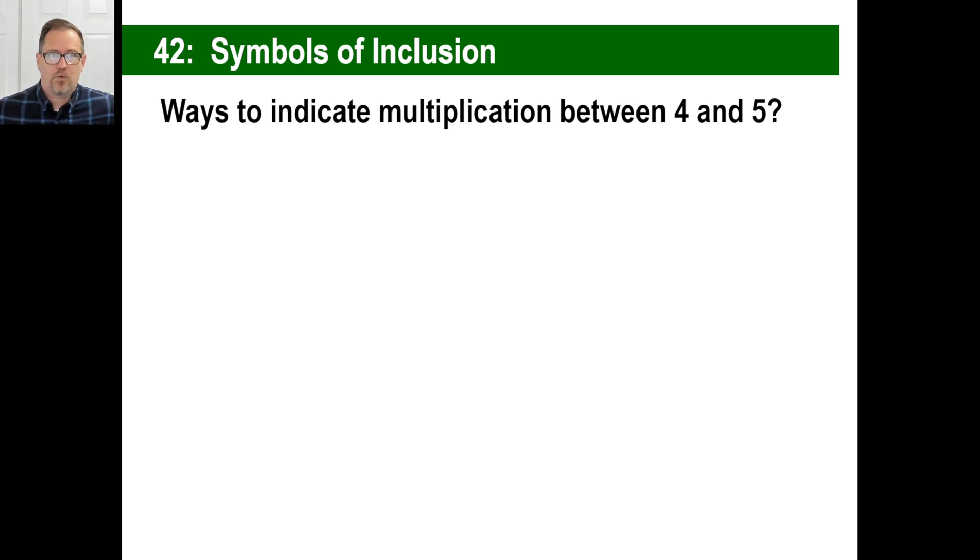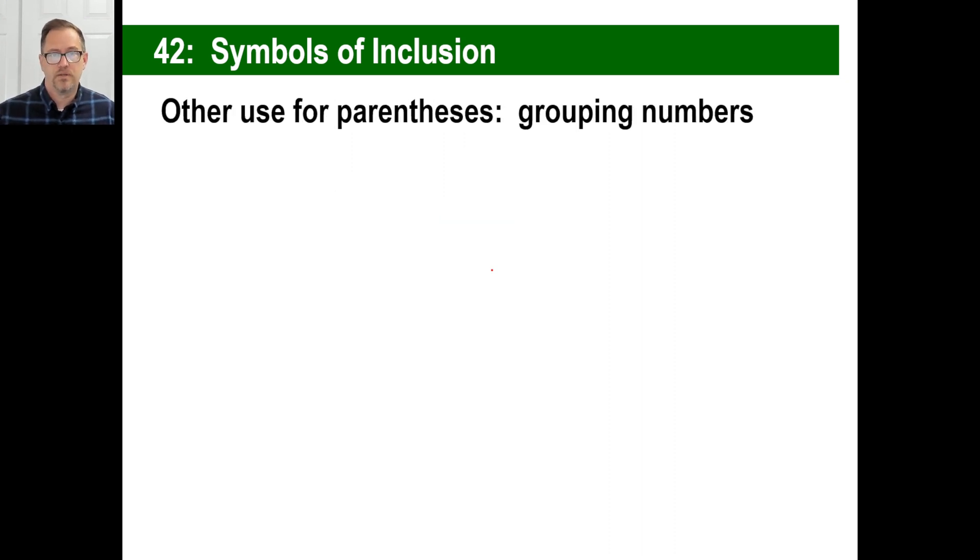Hey guys, let's take a look at lesson 42, the symbols of inclusion, which means you include things. What are some ways that you can say 4 times 5? Well, you can go 4 times 5, you can say 4 - we avoid this now because we're in algebra and we don't want to use x's. You could say this way, 4 times 5, or you could say both of them, 4 times 5, or you could go 4 times 5. Parentheses mean multiply.